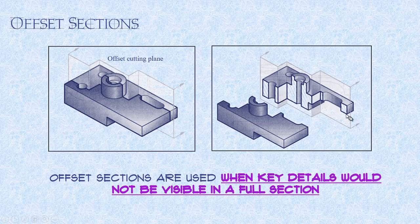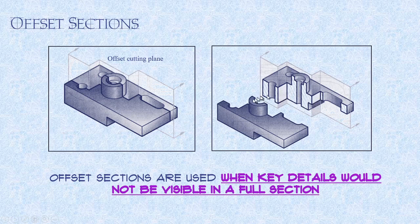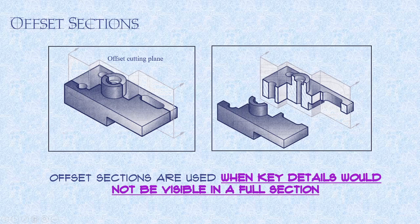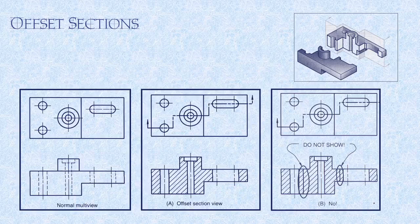And those are offset sections. So once again, our section view would show this all as one solid orthographic view. We wouldn't actually see the depth portions of this because it's a front view that we'd be looking at. So offset sections when we're not cutting all the way through an object.